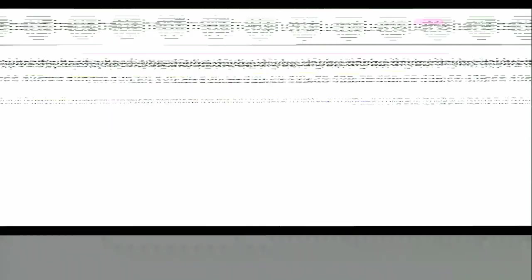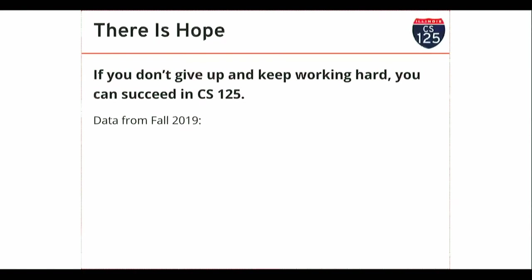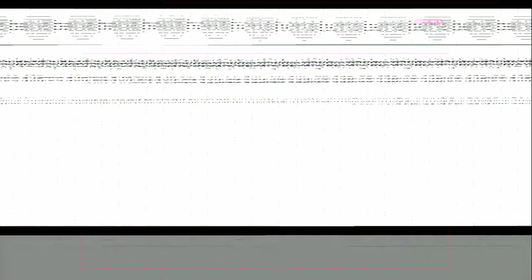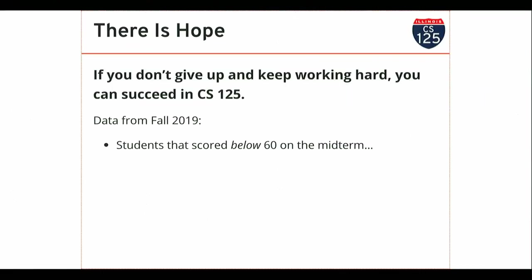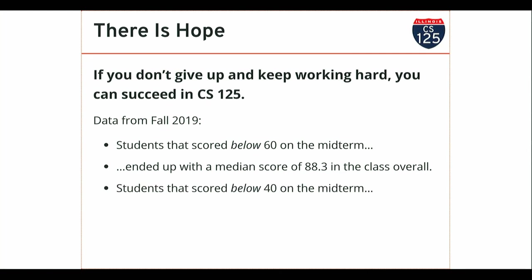I'm a data scientist — I believe in data. I remember having conversations with students last semester who did pretty poorly on the midterm. Some of them are on the course staff now, and some of them did quite well by the end of the semester. So I decided to look at the data from last fall. Students that got below a 60 — so what you'd call an F — ended up with a median of 88 in the course. Students below a 40 ended up with a median of 83. These are passing grades.